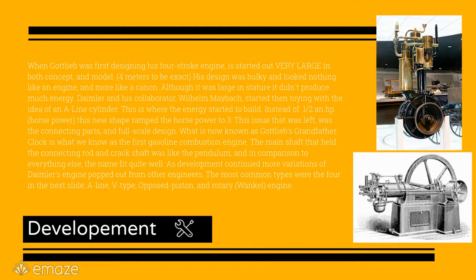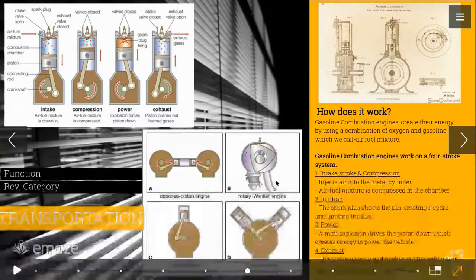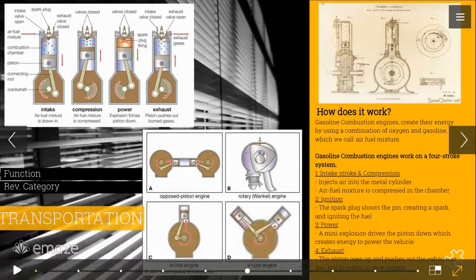As development continued, more variations of Daimler's engine emerged from other engineers. The most common types include the A-line, V-type engine, a flat engine, and the rotary, or Wankel engine.